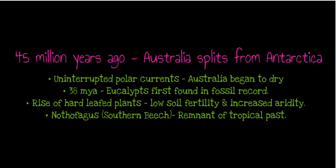Evidence for this includes the remnants of southern beeches on Gondwana continents, which are a remnant of the tropical past. In a rainforest environment with high rainfall, important nutrients were leached out of the soil. As the climate dried, eucalypts evolved to dominate and we see a contraction of the rainforest.